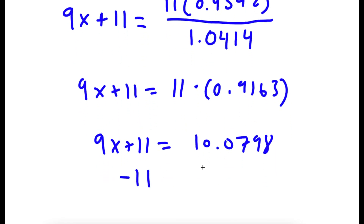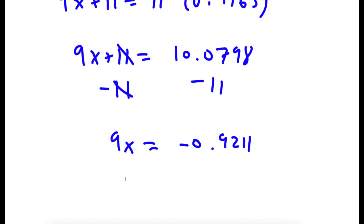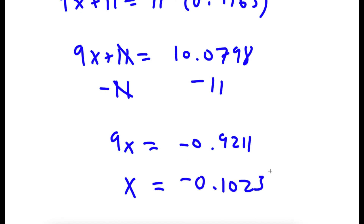So subtracting 11 from both sides, I have 9x is equal to negative 0.9211, meaning x is equal to negative 0.1023.